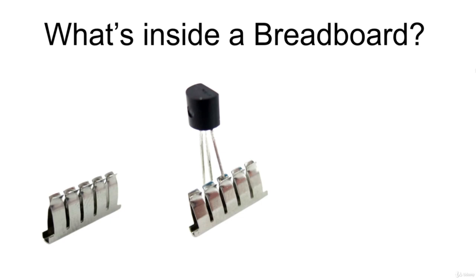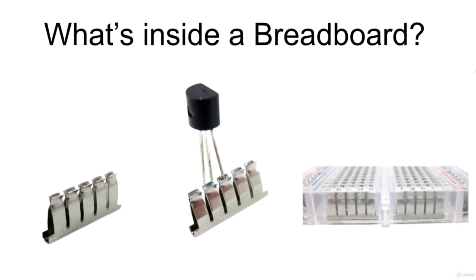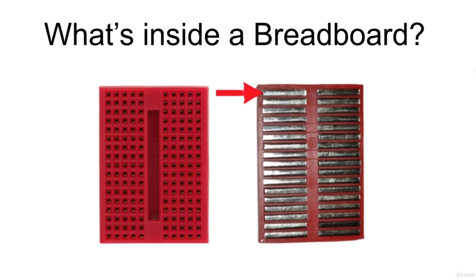Each clip makes a unique electrical connection since it is a single piece of conductive material. So if you want to make an electrical connection between two components, you can just use two holes in the same row of a breadboard. You can see how each horizontal row is made of these metal clips. There is also a gap in the middle of the breadboard, which halves a single row into two isolated sections, each with five holes.